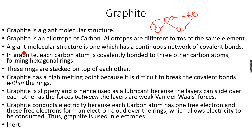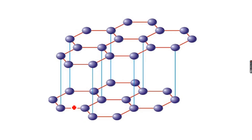Graphite is an allotrope of carbon, meaning it is made only of carbon atoms. In graphite's structure, each carbon atom is covalently bonded to three other carbon atoms, forming hexagonal rings. These rings form layers that are stacked over each other.